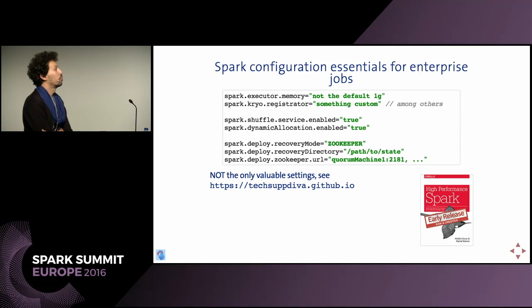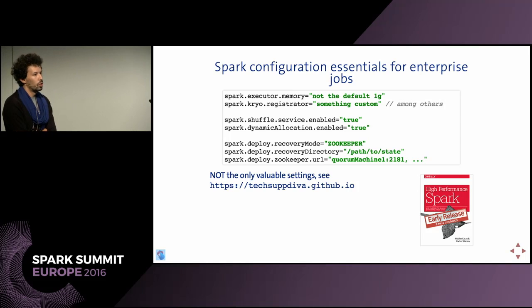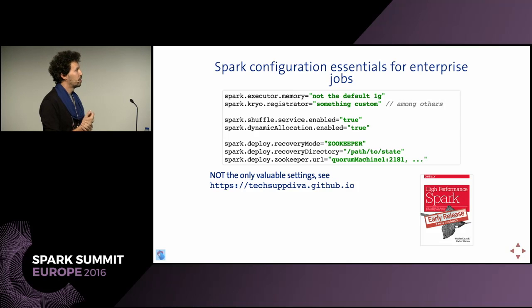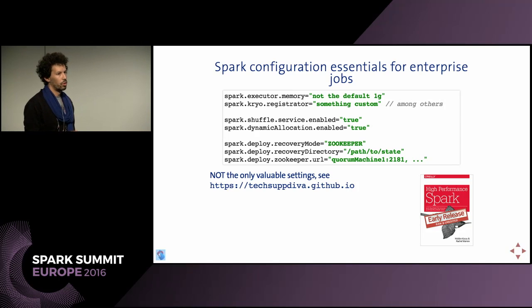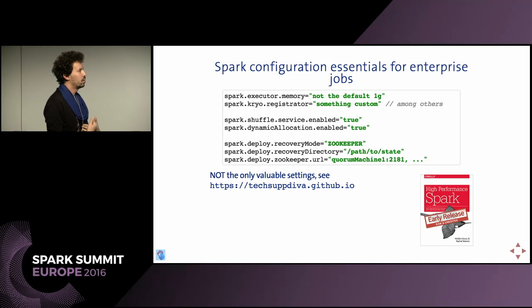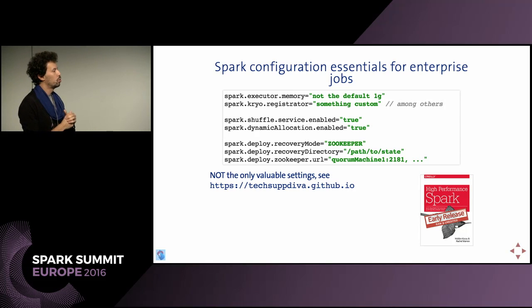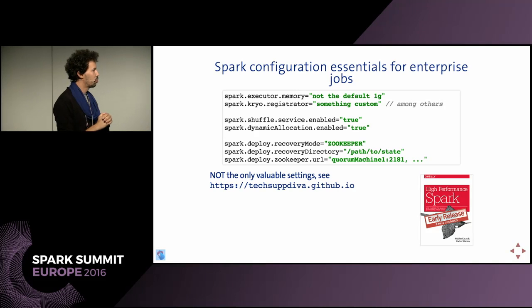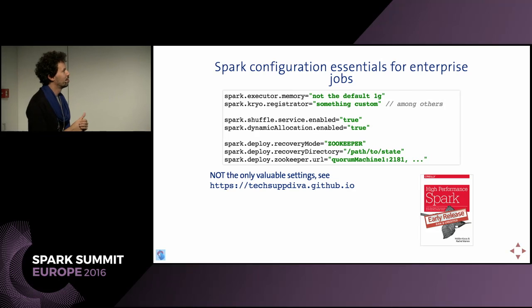Some Spark configuration essentials for enterprise jobs: definitely increase the memory of the executors, since we have more powerful machines in our cluster. Use a Kryo serializer because it's much faster. Enable shuffling and dynamic allocation to balance resources within the cluster — this is important for both streaming and batch mode, as it alleviates the dependency of the streaming job on initial allocation. To remove a single point of failure, you can use ZooKeeper for recovery mode. There's also a book reference, and of course you can ask François — he's very knowledgeable about that.